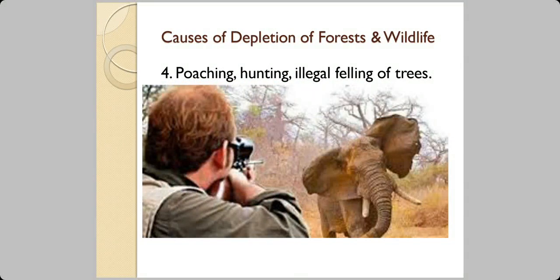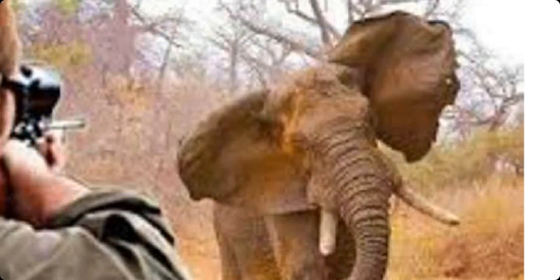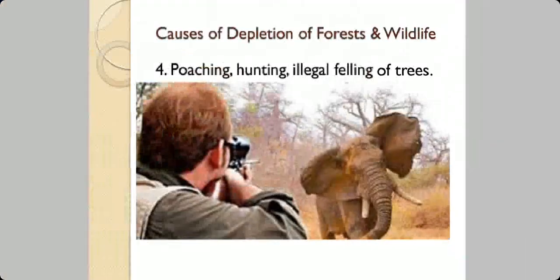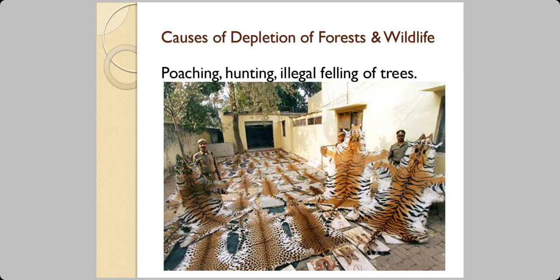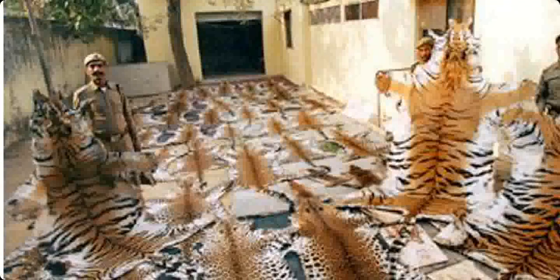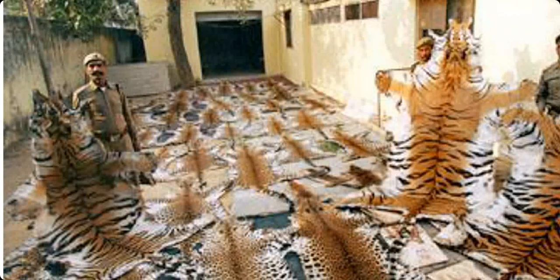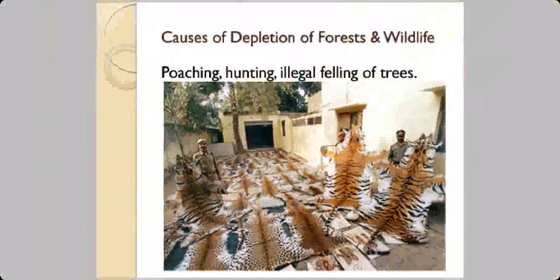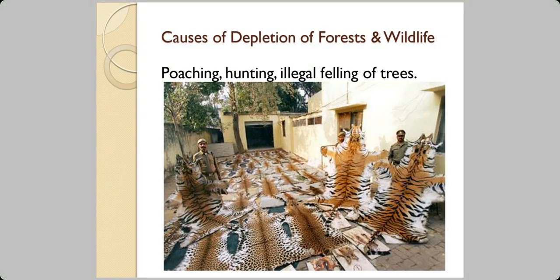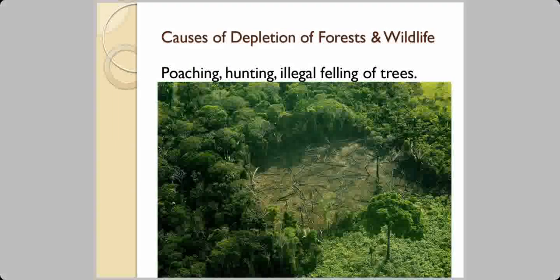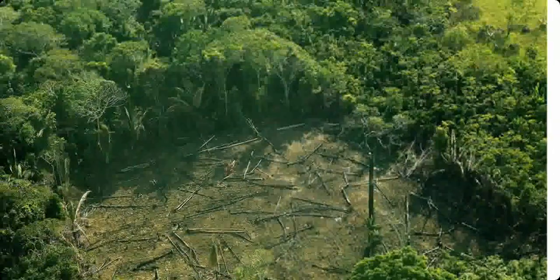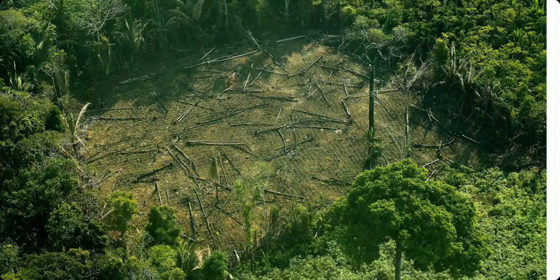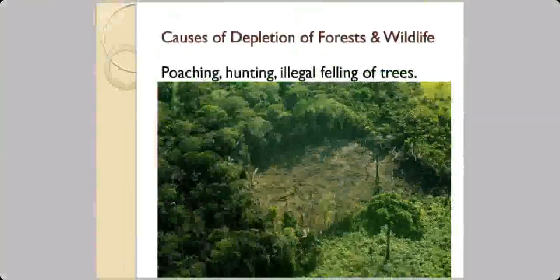Illegal poaching, hunting, and felling of trees is another reason. Poaching often goes unnoticed, but poachers are sometimes caught and their goods confiscated — one image shows 29 tiger skins along with leopard skins and other wildlife. Illegal felling of trees is also a crime, just like killing animals, and often goes unaddressed.